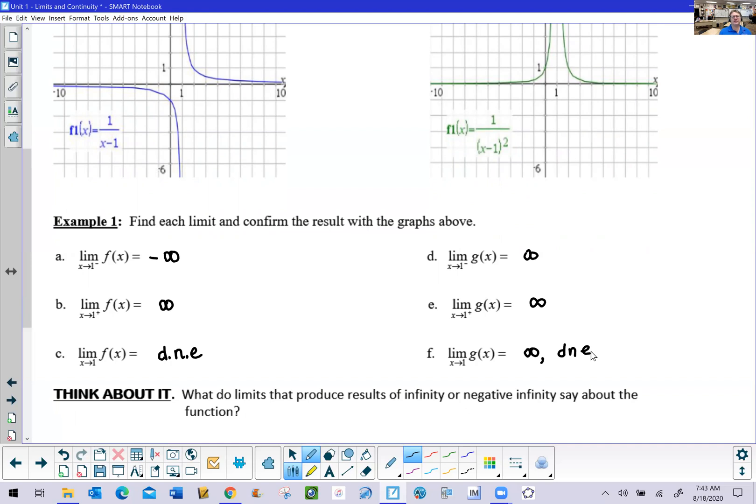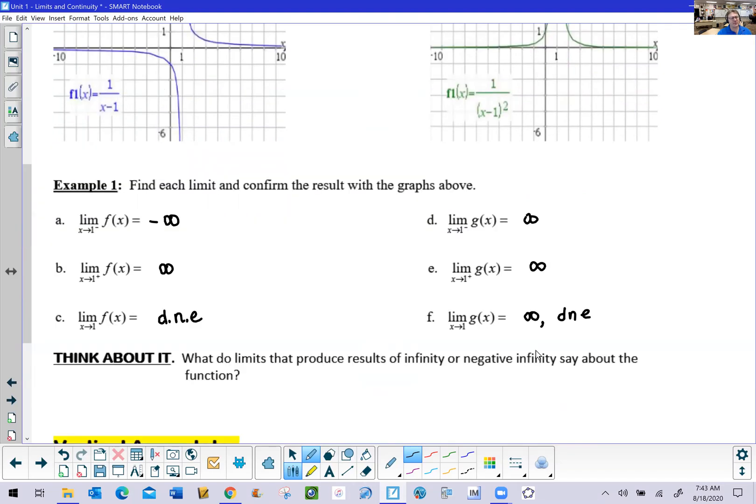I know it's kind of confusing about when do you use infinity and when do you use does not exist. As we've said before many times, both of these answers could never show up as answer choices in a multiple choice situation, because they would both be deemed correct. But this is probably going to be the strongest argument here for part f. Think about it. What do limits that produce results of infinity or negative infinity say about the function?